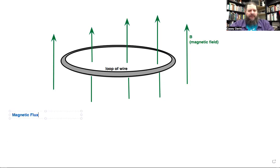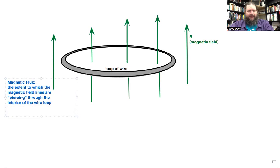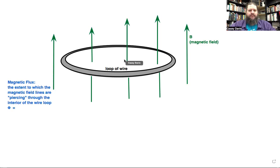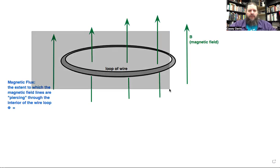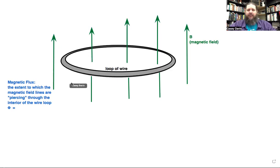We define magnetic flux — we call it capital Phi — as the extent to which the magnetic field lines are piercing through the interior of the wire loop. Mathematically, one factor is the surface area. If you shrink the area, fewer magnetic field lines pass through it, so flux scales directly with area.